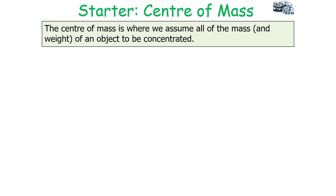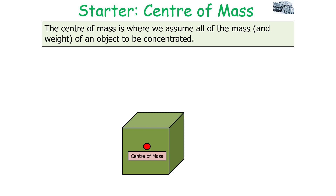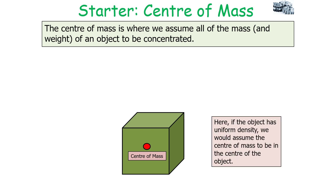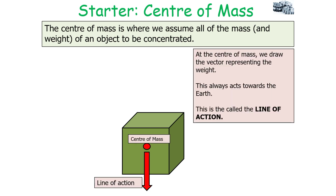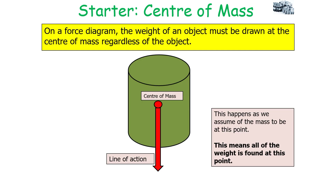The centre of mass is where we assume all of the mass and the weight of an object to be concentrated, as shown in the following diagram. If the object has a uniform density, we would assume the centre of mass to be in the centre of the object. At the centre of mass, we draw a vector representing the weight, and this always acts towards the centre of the earth — we call this the line of action. On a force diagram, the weight of an object must be drawn at the centre of mass regardless of the object, because we assume all of the mass and therefore all of the weight to be at this point.